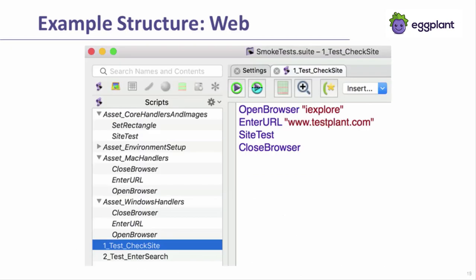Here's an example of a possible suite structure. The shown suite represents the test design suite at the top level. The test design suite has its own scripts which combine reusable handlers to build a test. There are four suites added as helpers, including one for each of the Mac and Windows platforms, containing scripts unique to those platforms. Note how each suite has a version of the cross-browser, enter URL, and open browser scripts. This script name reuse is intentional and allows the test script to run against either the Mac or Windows platforms.